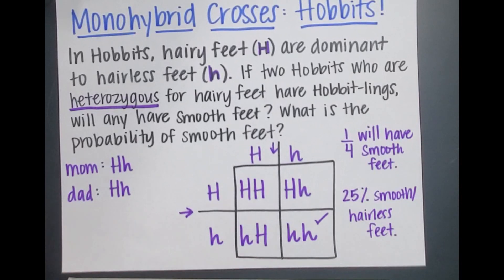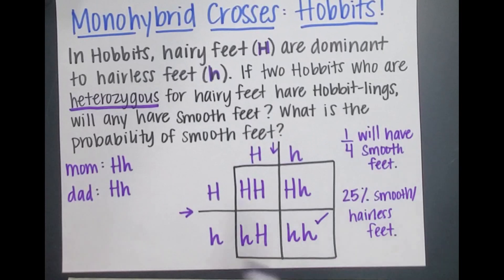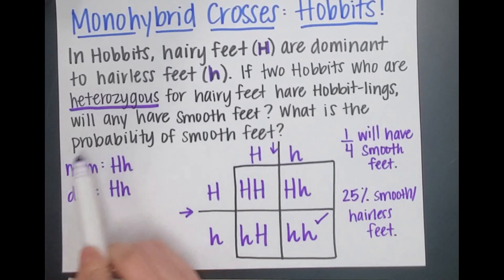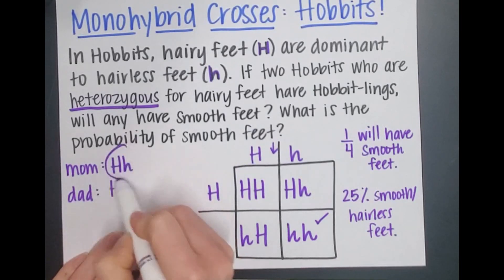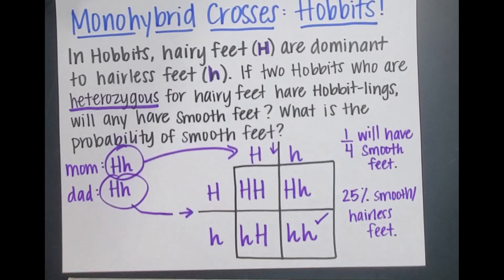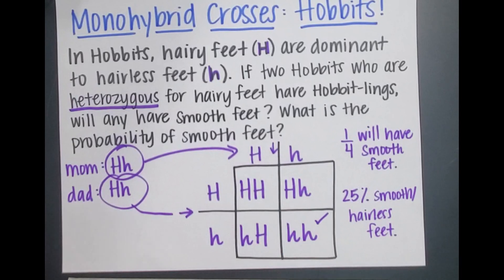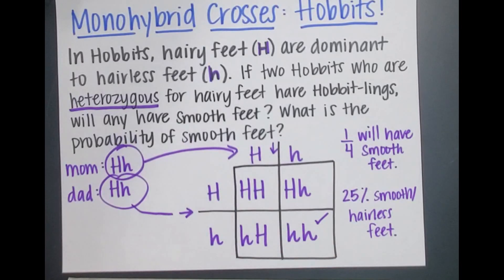That's all you need to do for a monohybrid cross. A couple of keys to recap: make sure you figure out the parent genotypes first — in plants you just have plant one and plant two, not necessarily a mom and a dad. Put one genotype at the top and one genotype on the side; you can't mix them up. Keep the parent genotype together on the top or the side of the Punnett square.